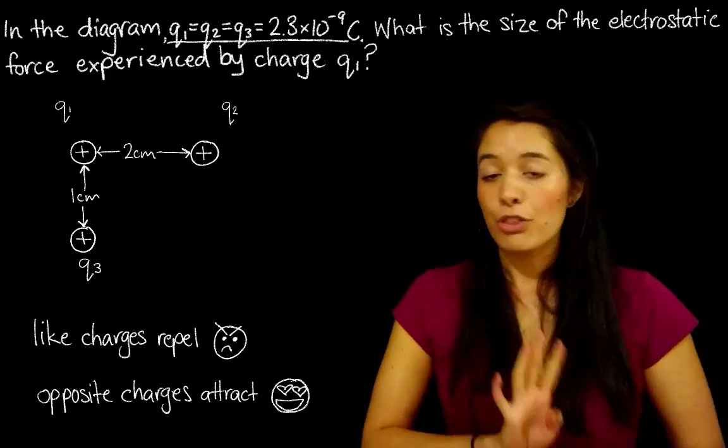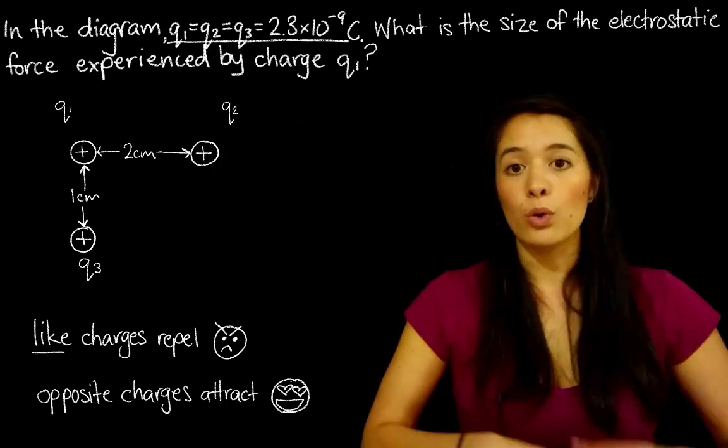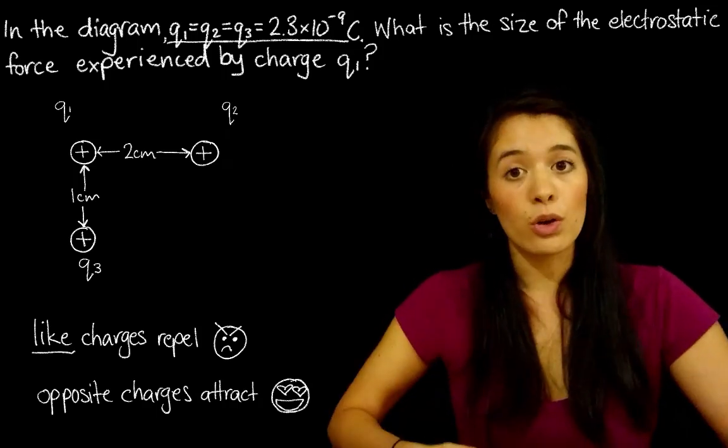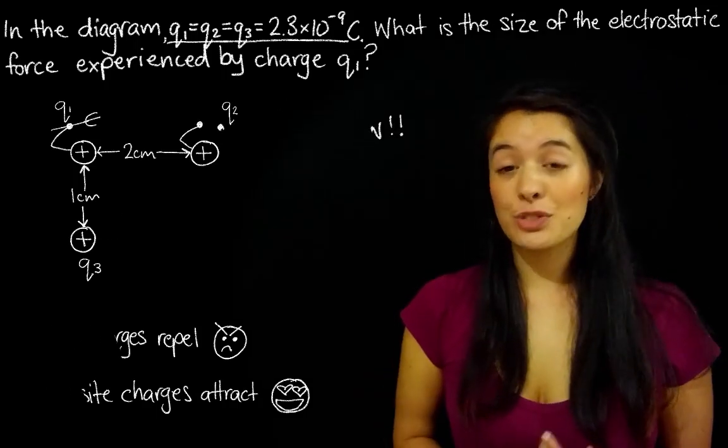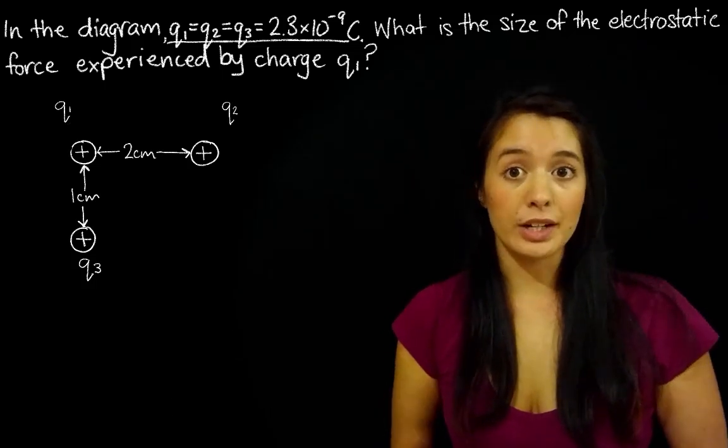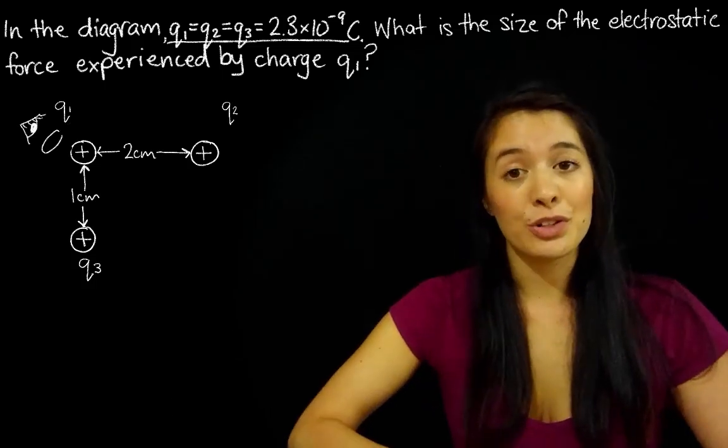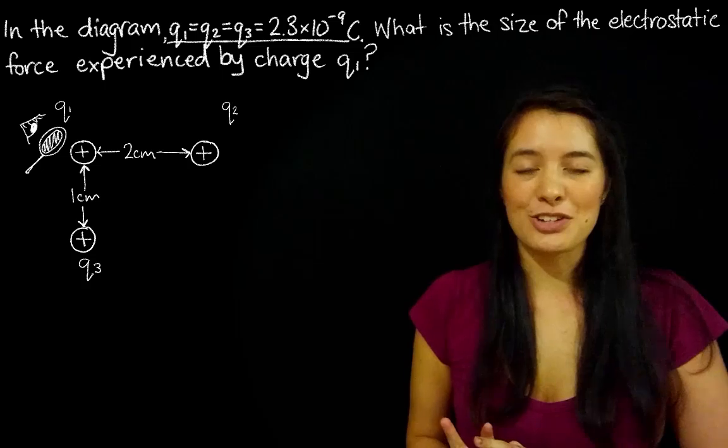We have three positive charges, so they are all like charges, so they are all repelling. Okay, so because the question is really only asking about Q1, we're going to really zero in on Q1 and kind of forget about Q2 and Q3.